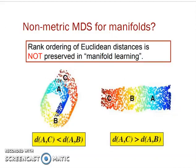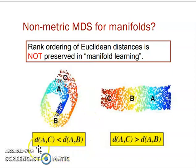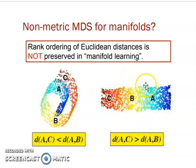Consider one example: the rank ordering of Euclidean distance is not preserved in manifold learning. Here the distance of A to C is measured on the plane and the distance of A to B is also shown. This figure suggests that the distance of A to B is larger than the distance of A to C, but in the manifold distance, A to C is larger than A to B. So rank ordering of Euclidean distance is not preserved in the manifold.